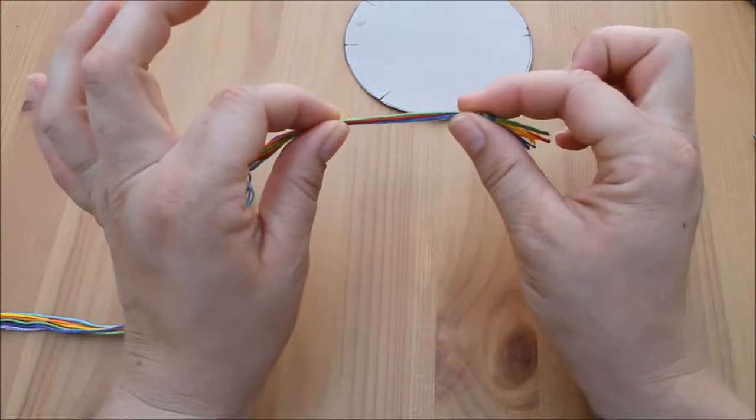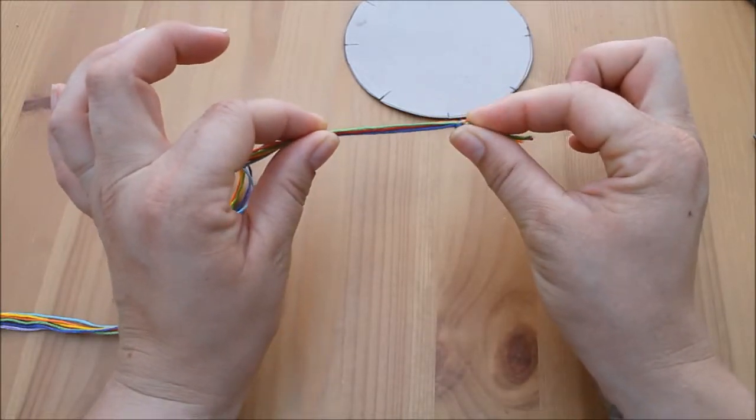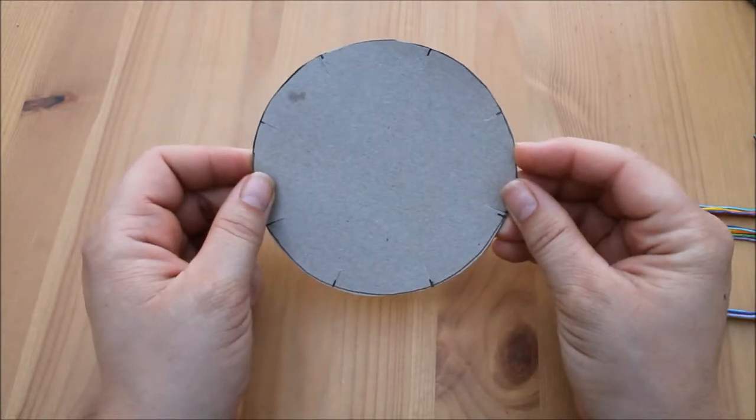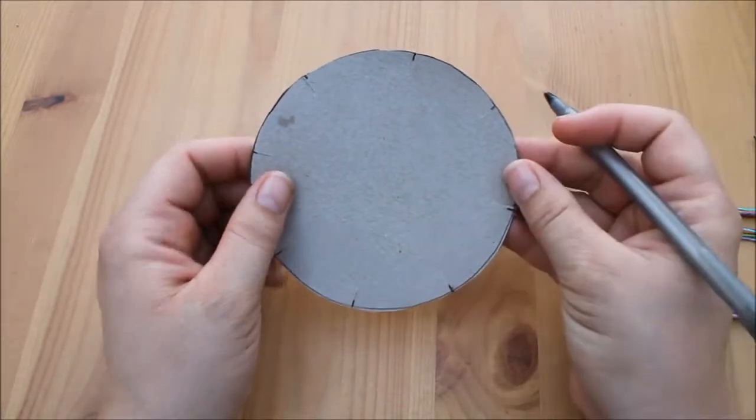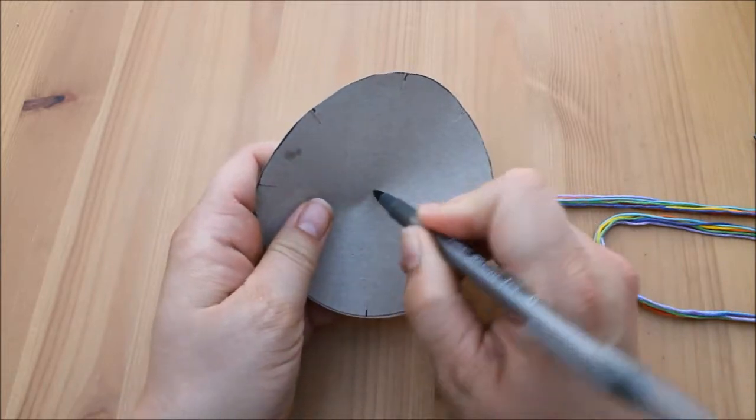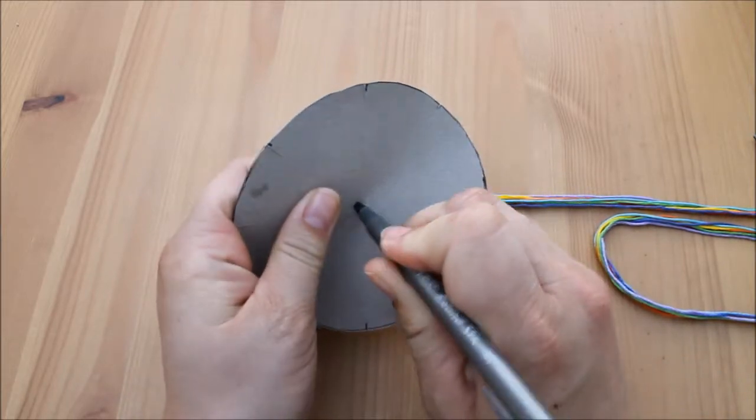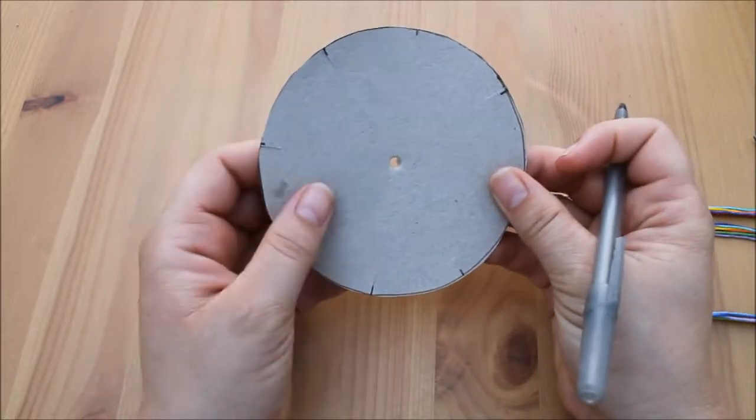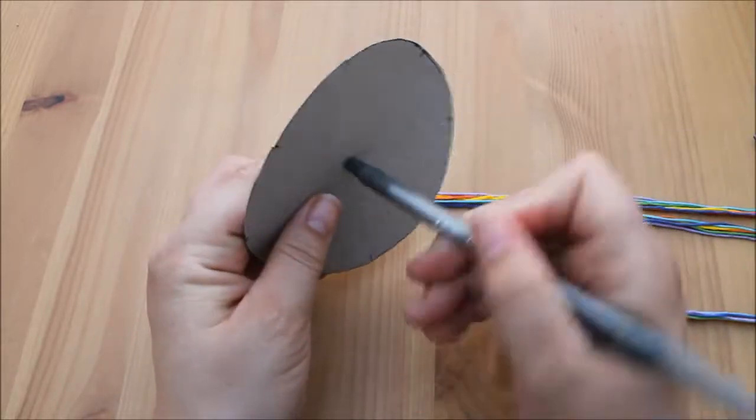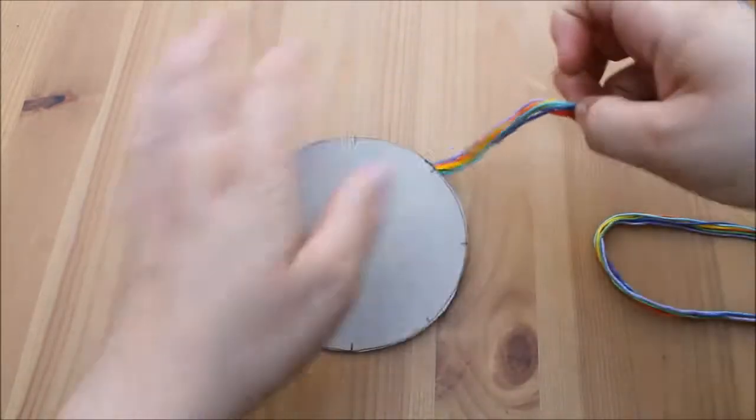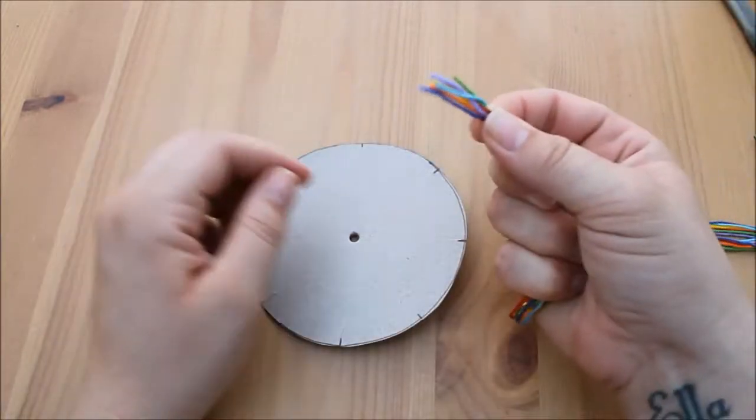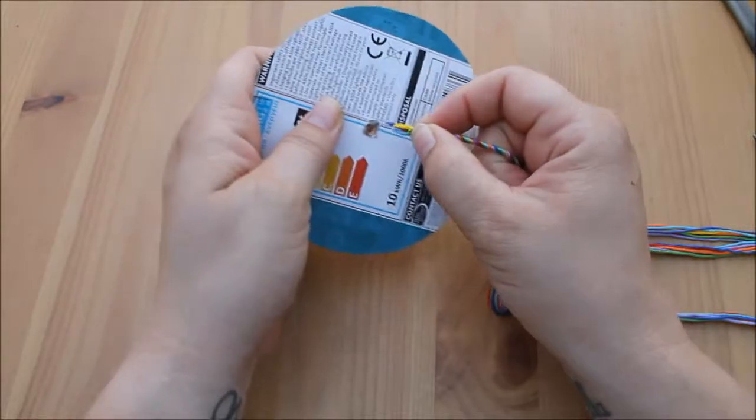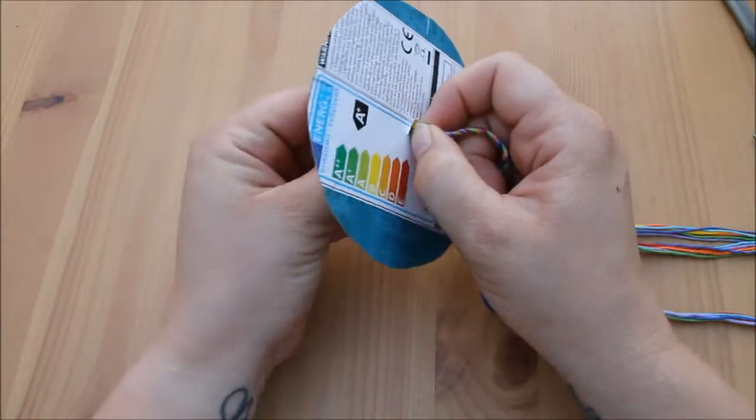This end can then be used for tying the bracelet together. We need to take our circle of cardboard and in the center just push through with a pen or a pencil. Obviously get an adult to do this just to make a hole in the middle. We take the unknotted yarn end, thread it through the hole in the cardboard, pull it right through to the knot.